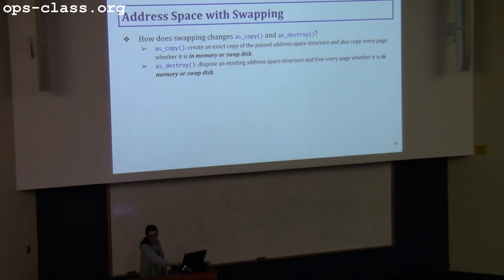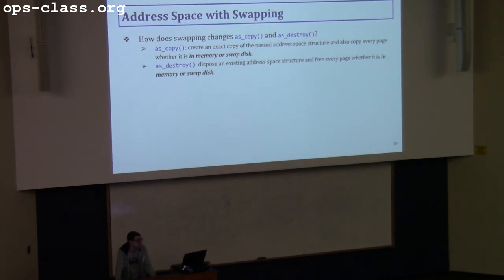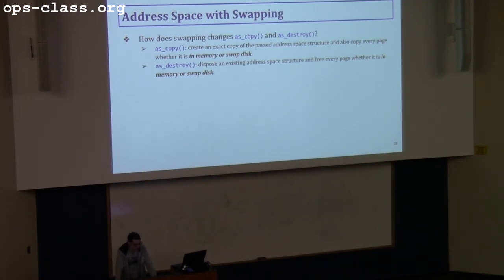A few things to note are the changes that come with swapping to the address space interfaces. With AS copy and AS destroy: with AS copy, you need to copy each and every page whether it is in memory or on the swap disk. How you do this is up to you — for example, if the page is on the swap disk, you can bring it into physical memory and then copy it, or copy it directly from the swap disk. With AS destroy, you need to free each and every page, both in memory and on the swap disk.